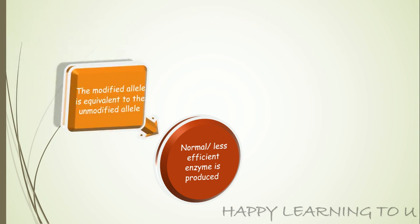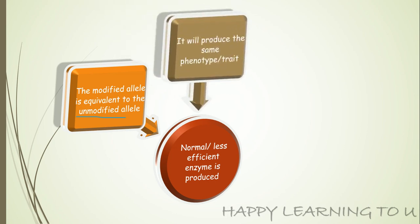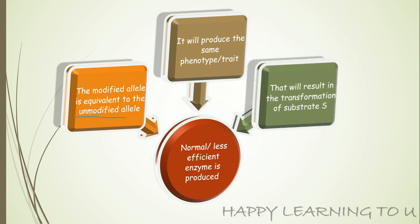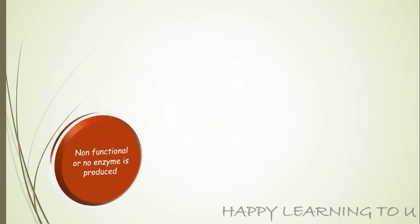In case the modified allele produces a normal but less efficient enzyme, it is equivalent to the unmodified allele. Although it is less efficient, it still produces the same phenotype or trait that would have been produced by a normal enzyme. Ultimately it will result in the transformation of substrate S, because it is still capable of carrying out that function, although its efficiency is less.